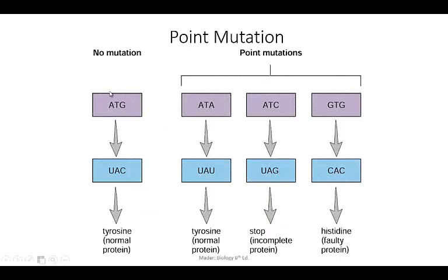Here are some examples. In the normal protein, the DNA sequence ATG would produce an mRNA of UAC, which codes for tyrosine. If that ATG was changed to ATA — a point mutation changing G to A — this would be a silent mutation because it still codes for tyrosine, giving a normal protein. If ATG was instead changed to ATC, this would code for a stop codon, producing an incomplete protein — an example of a nonsense mutation. If ATG was changed to GTG, this would code for histidine instead, giving a faulty protein — an example of a missense mutation.